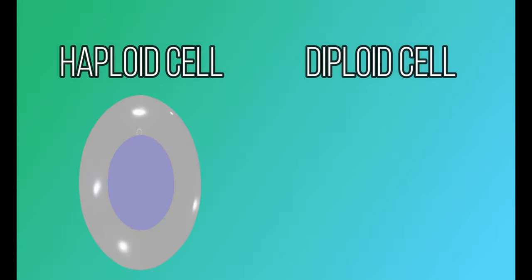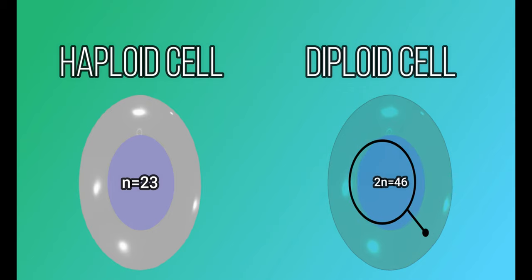A haploid cell is a cell that contains N chromosomes in its nucleus, while a diploid cell is a cell that contains two N chromosomes in its nucleus. All the cells of our body are diploid except the gametes which are haploid.